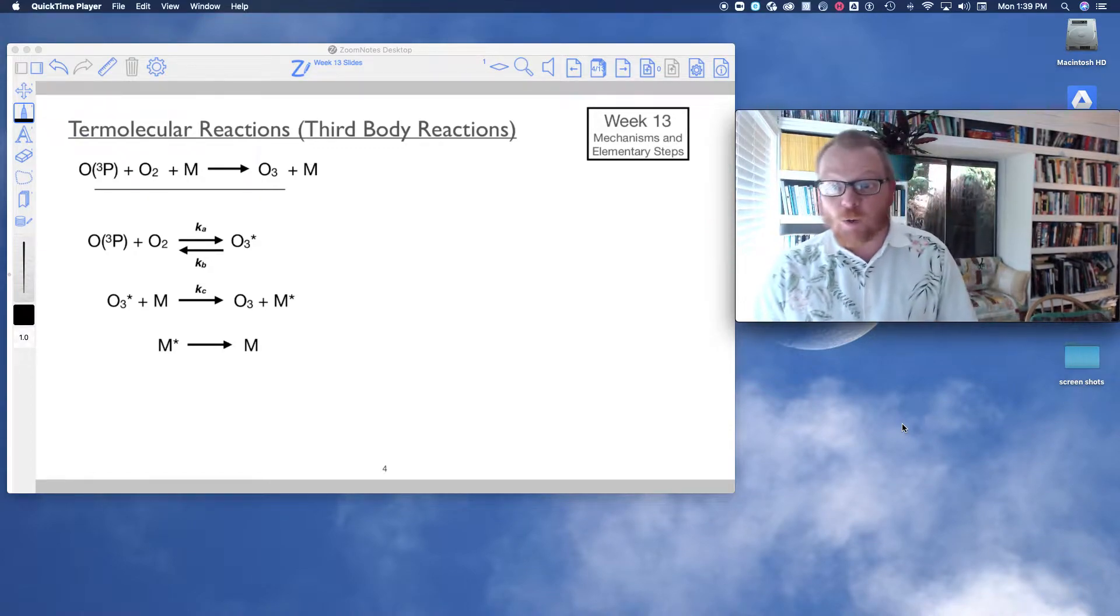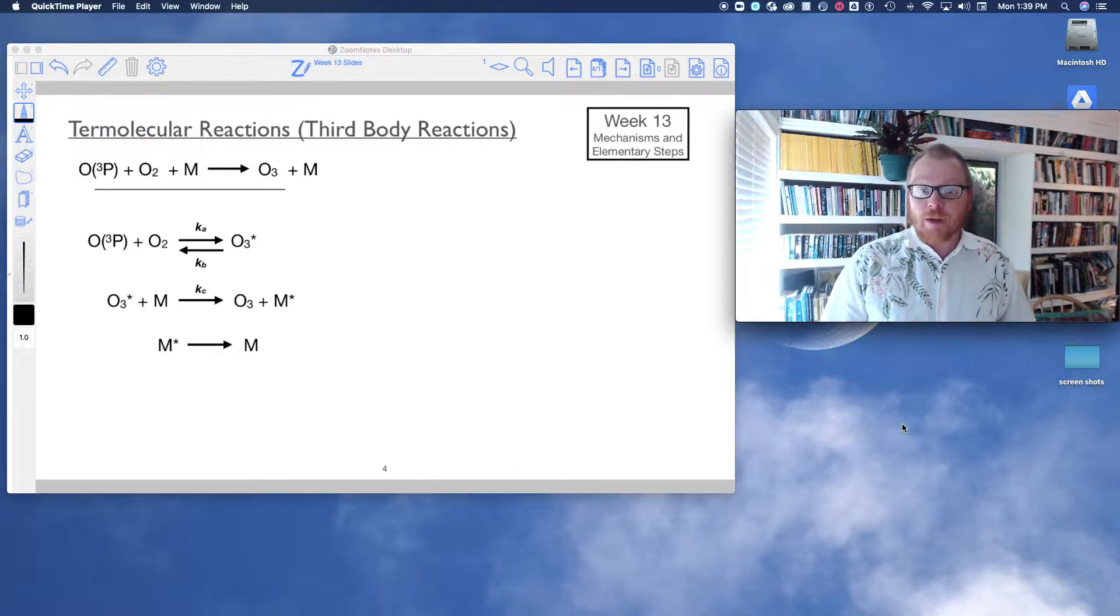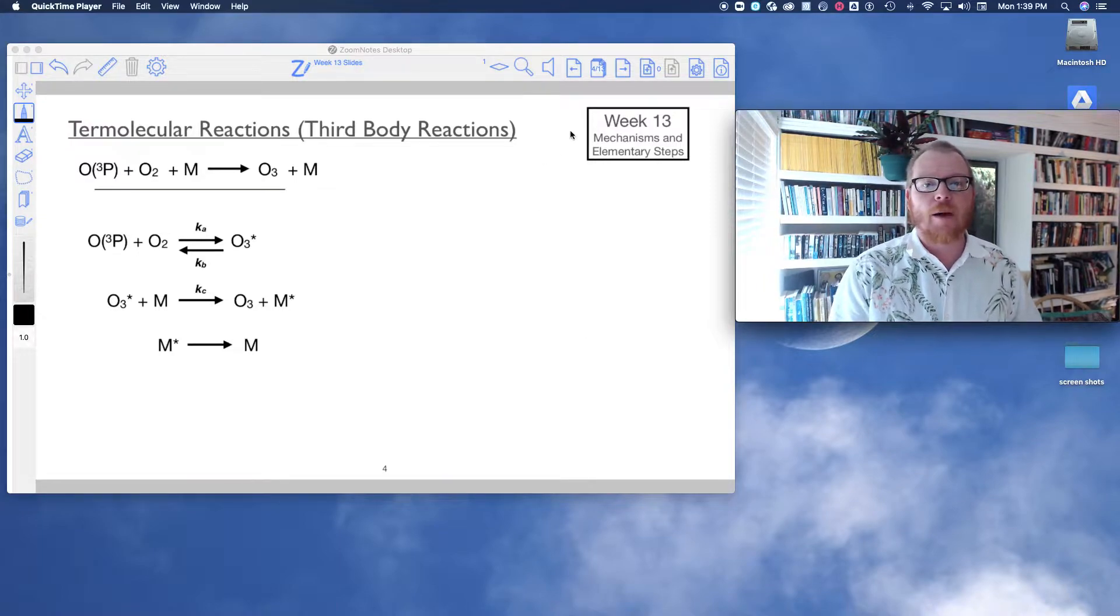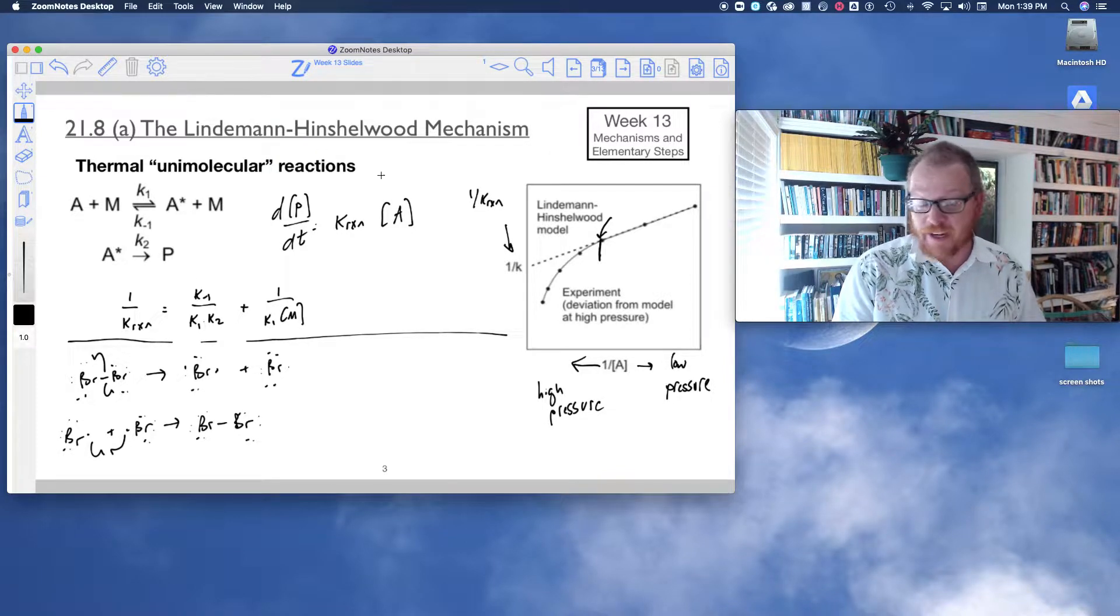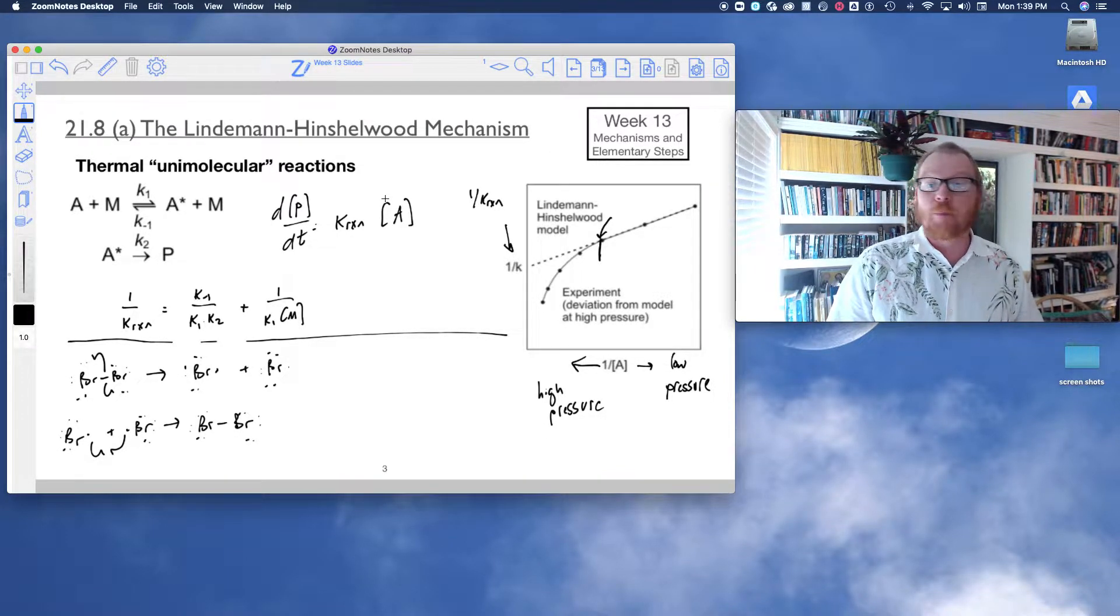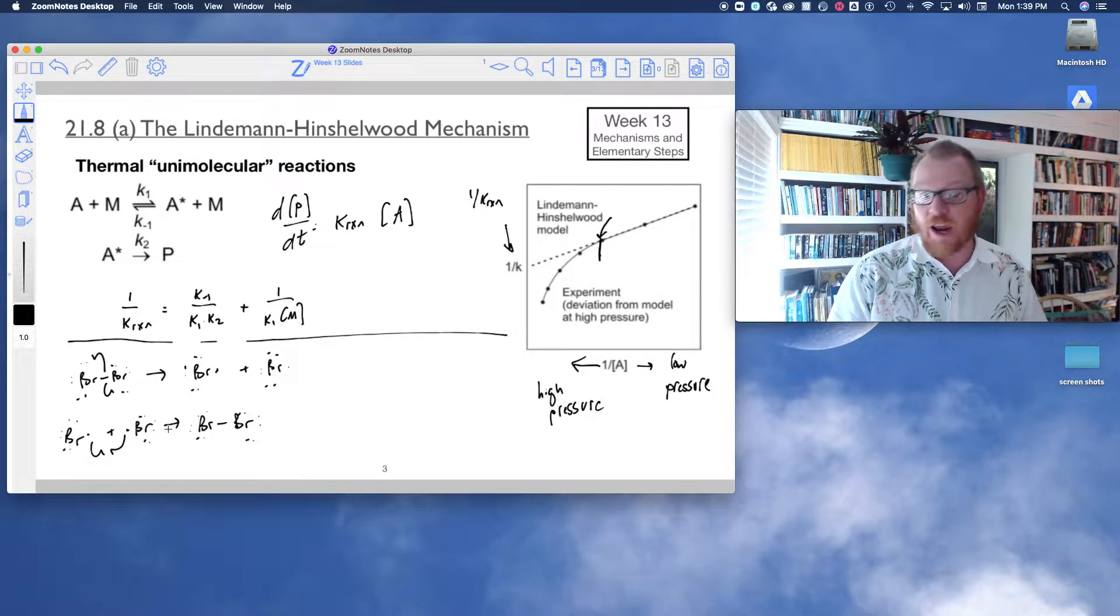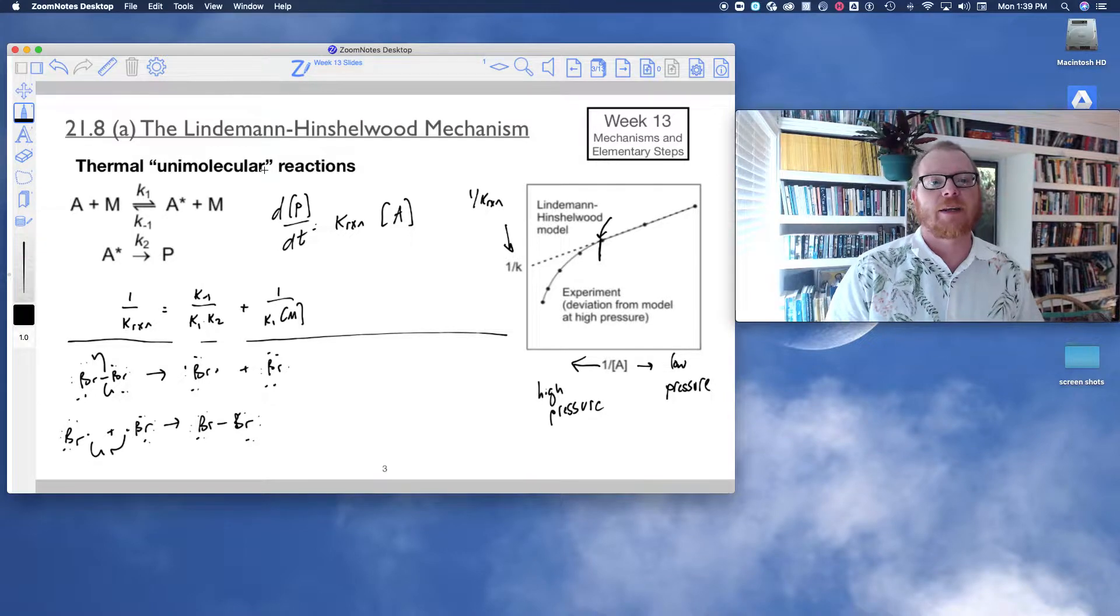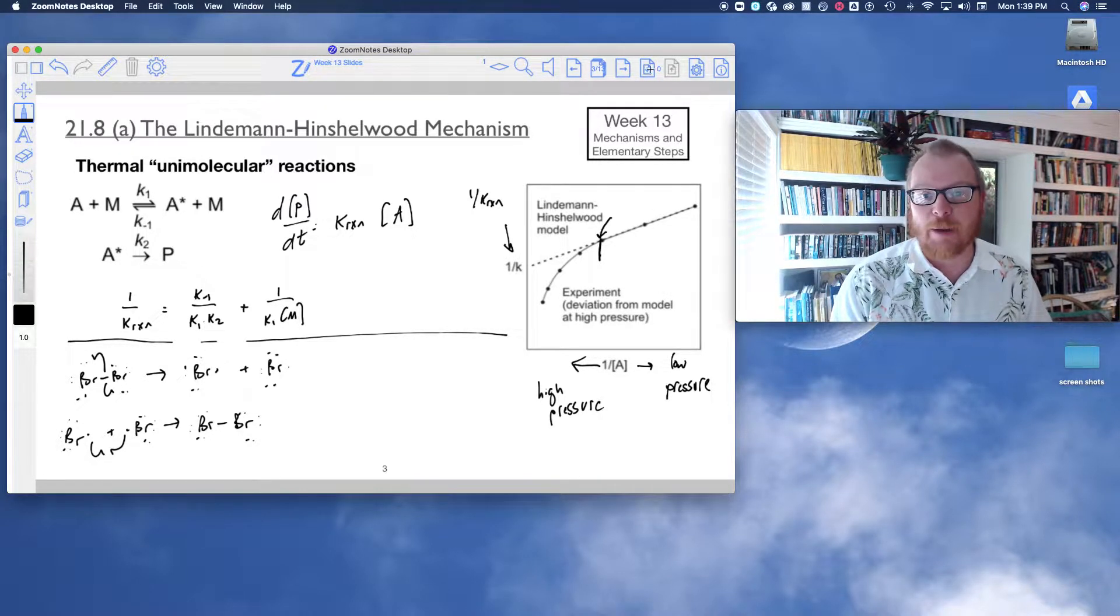Okay, hey folks, picking up where we left off. I'm going to talk about another specific mechanism example. Last time I went through the Lindemann-Hinshelwood mechanism, which is a general mechanism, but I used that specifically to talk about the bromine reaction. We can apply this Lindemann-Hinshelwood mechanism to a lot of different types of reactions.